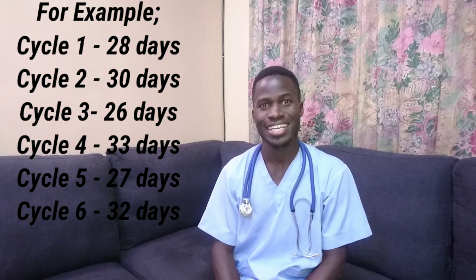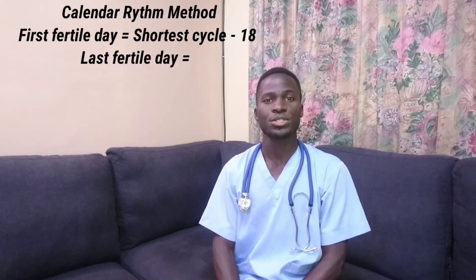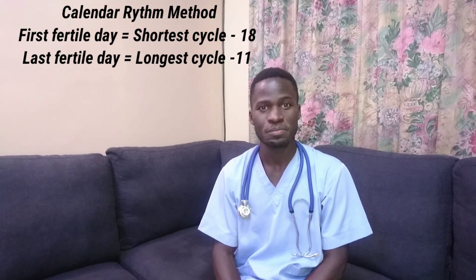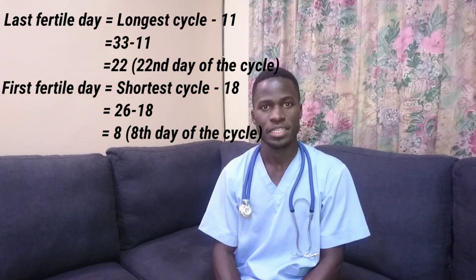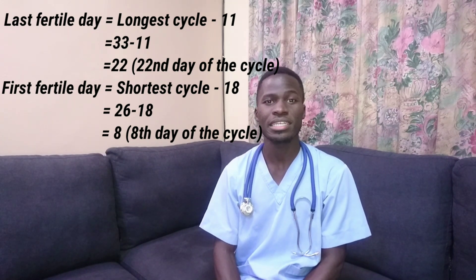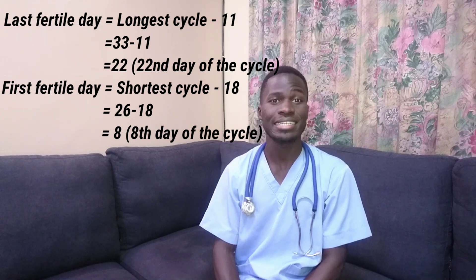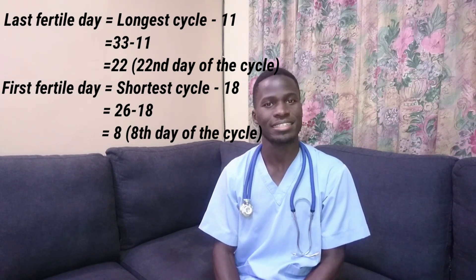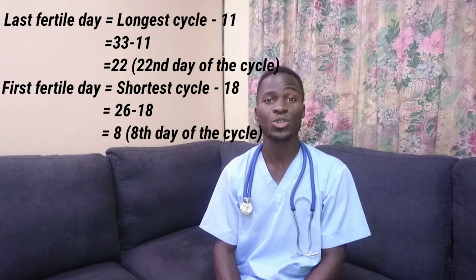We're going to do some mathematics, so you can get your pen and paper. You get the longer cycle — say, for example, it's 33 — and you subtract 11 from it, so you get 22. Then you get the shortest — maybe it's 26 — so you get 26 minus 18 and you get 8. Meaning for such a female, her first fertile day is on day 8 and her last fertile day is on day 22.